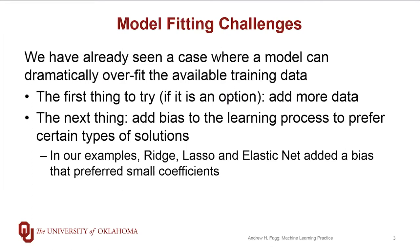We've already had some demonstrations where a training procedure can dramatically overfit the training data it is given. When we're faced with this kind of situation, one of the first things we would try is to add more training data. If we are indeed overfitting, performance on an independent data set should increase as we add more data, ultimately asymptoting at which point we can stop adding data.